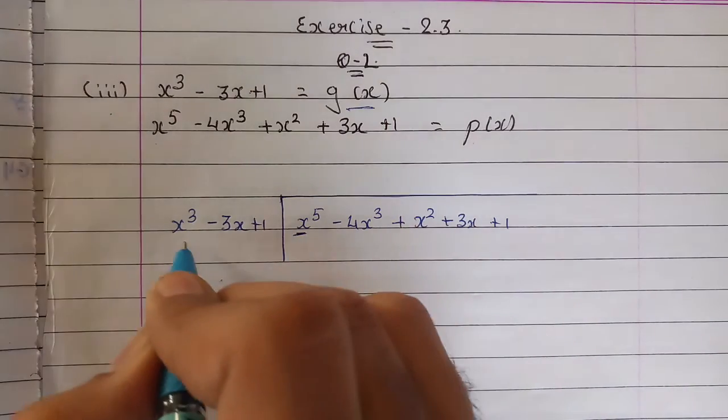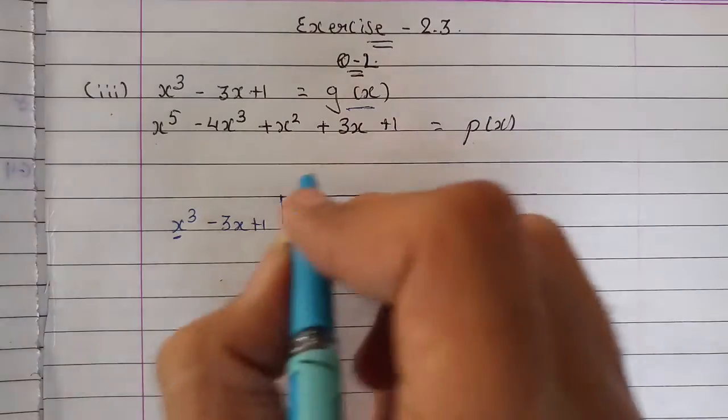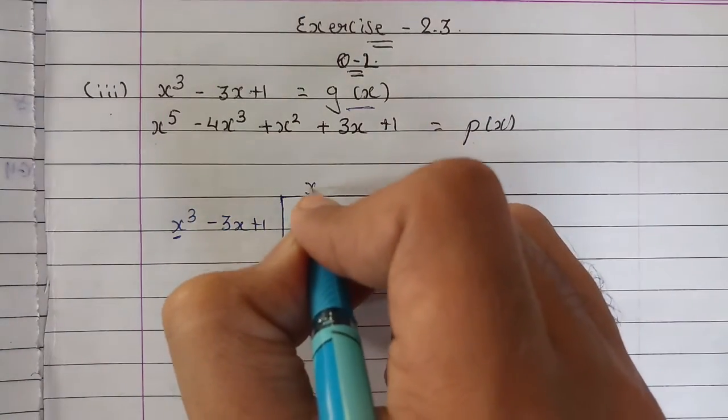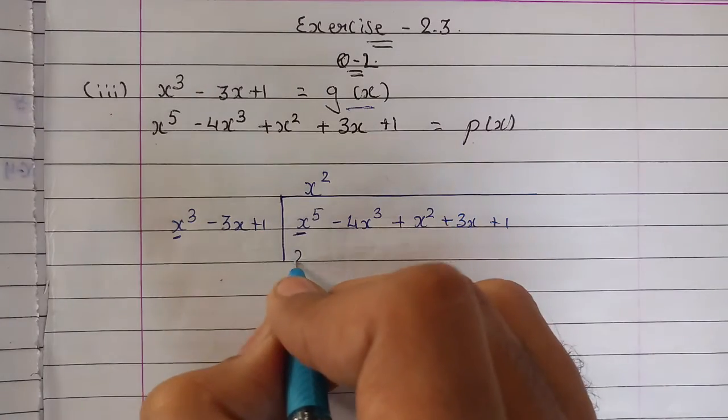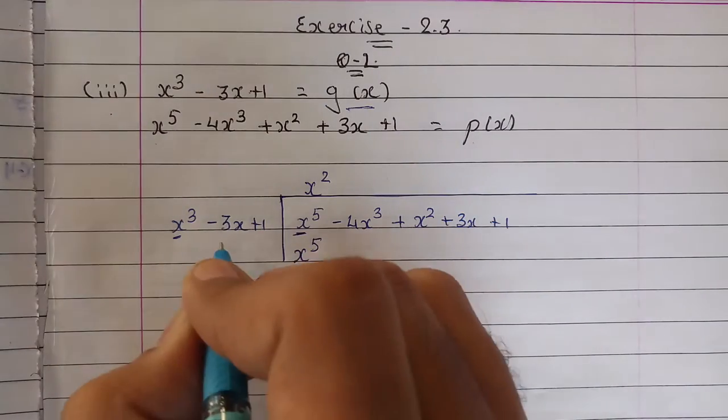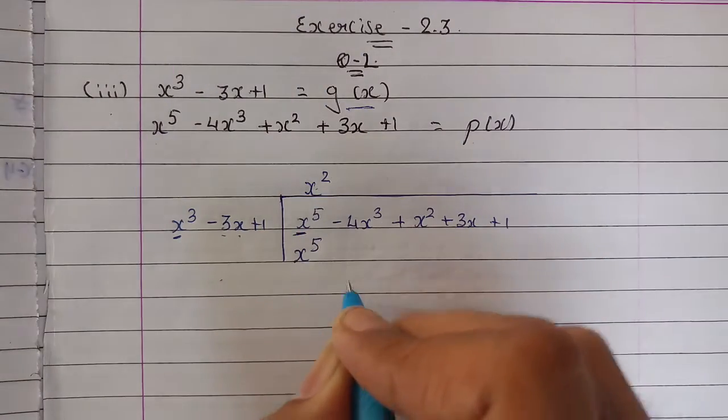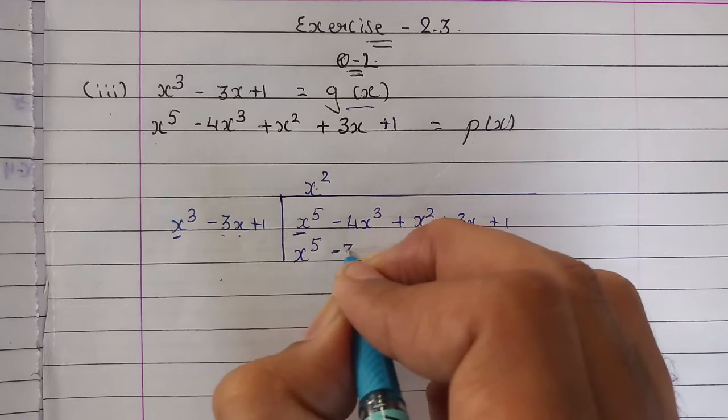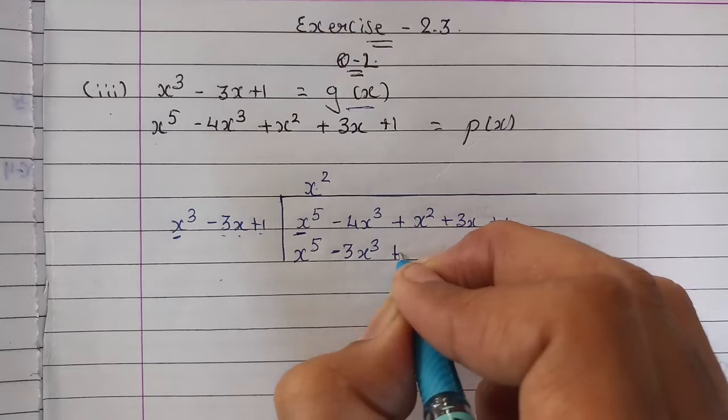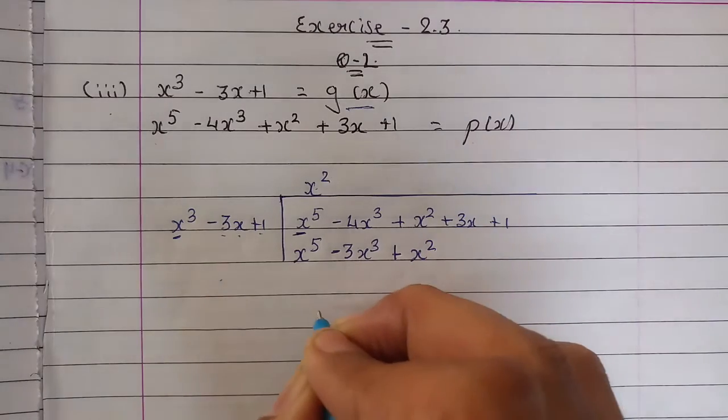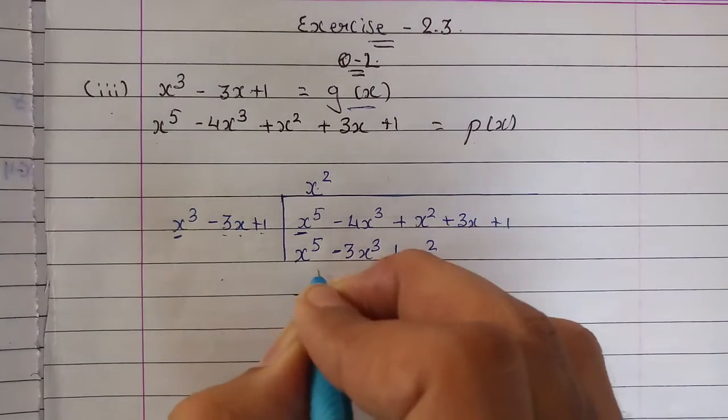In the first step, we divide x⁵ by x³, which gives x². So x² times x³ is x⁵, minus 3x times x² will be -3x³, and 1 times x² will be x² itself. Now for the second equation...